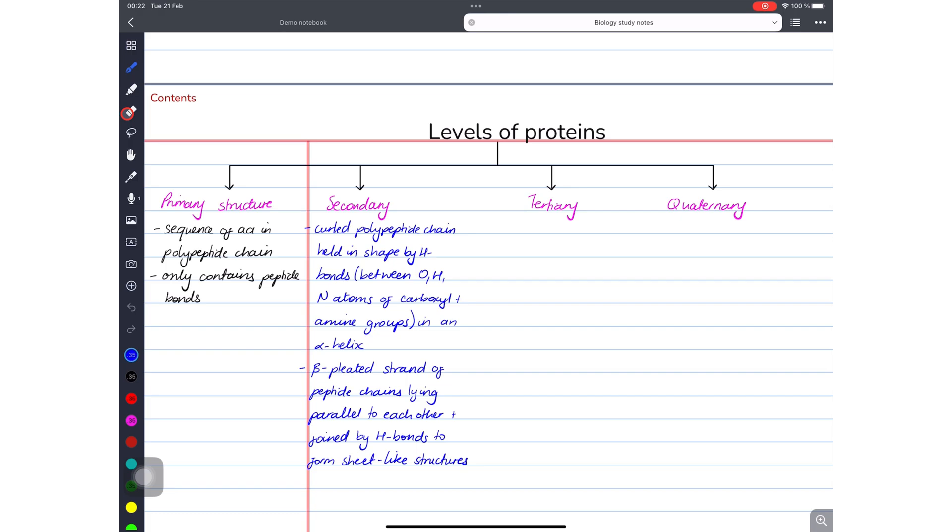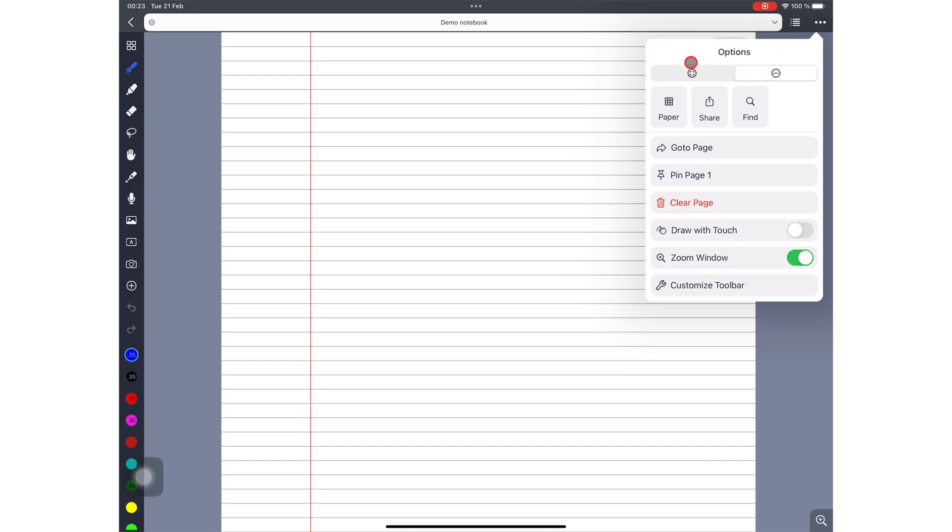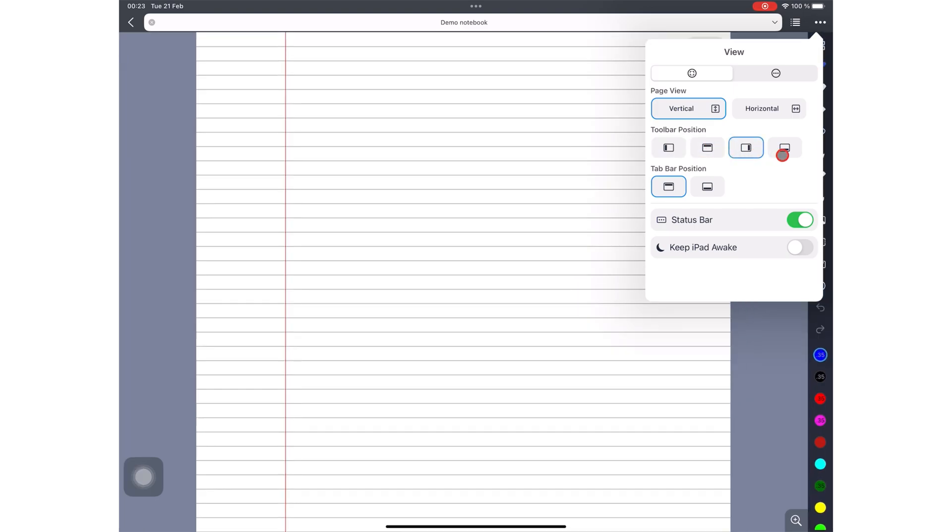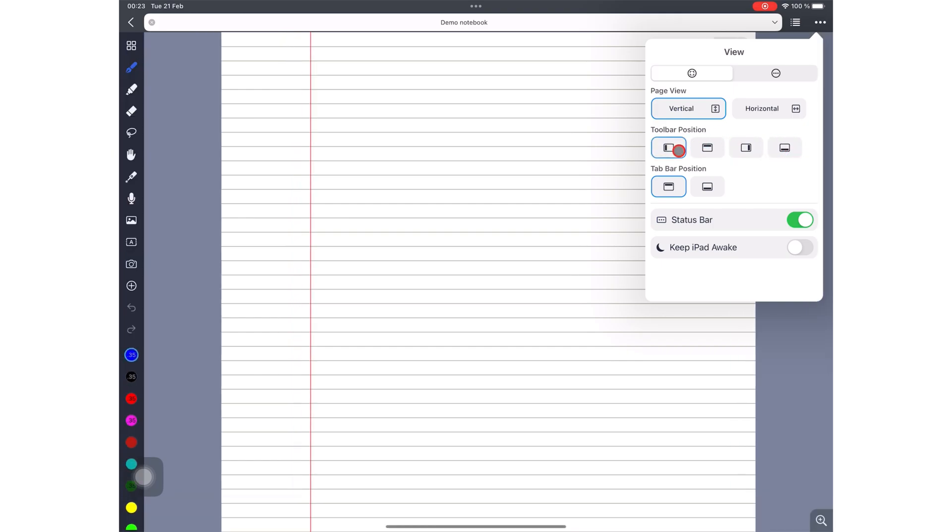So the first one we'll move is the toolbar. You go to the three dots icon, and then go to the view tab. You can choose the side of the screen you want this toolbar on. So it could be at the top, right, or bottom of your screen. Personally, I like it on the left side, so I'll just leave it there.